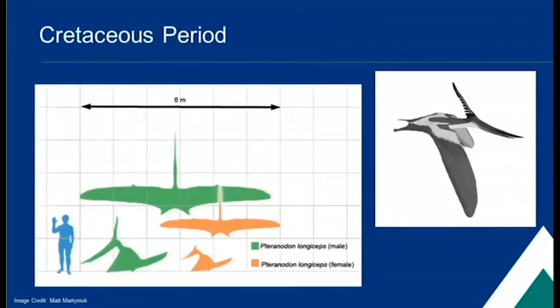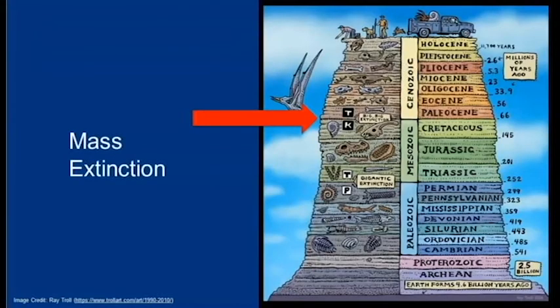Many rocks we see in Alberta today are from the Cretaceous period. Here's the KT boundary, which refers to the mass extinction event after the Cretaceous. 60–80% of species became extinct at this point, and the theory is that it was caused by an asteroid impact. There is an impact crater called the Chicxulub, found near the Yucatan Peninsula in Mexico, and this crater was formed about 65 million years ago — about the same time the dinosaurs went extinct. That's the current theory as to how the dinosaurs died out.